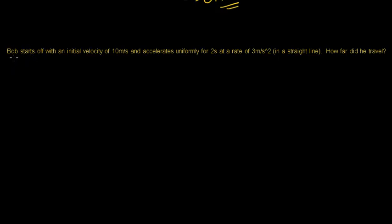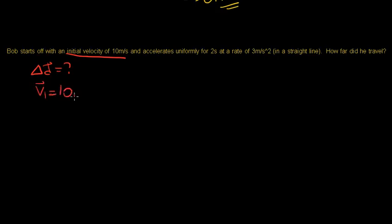Question two: Bob starts with an initial velocity of 10 meters per second and accelerates uniformly for two seconds at a rate of three meters per second squared. We're asked how far did he travel, so we're solving for displacement. Given variables: v1 equals 10 m/s, time equals 2 seconds, acceleration equals 3 m/s².